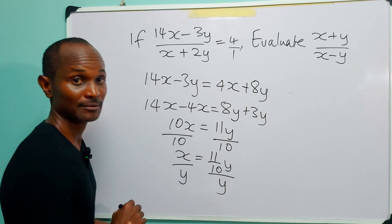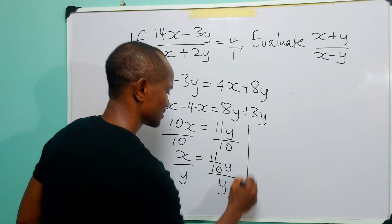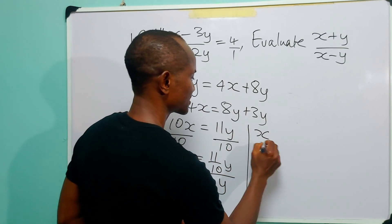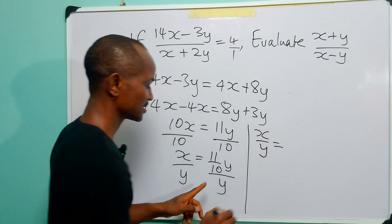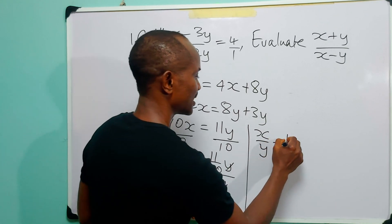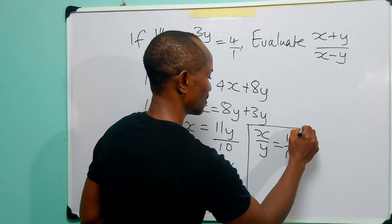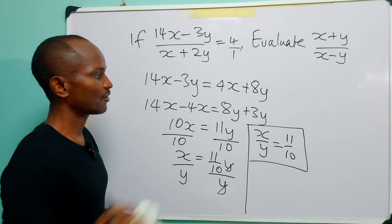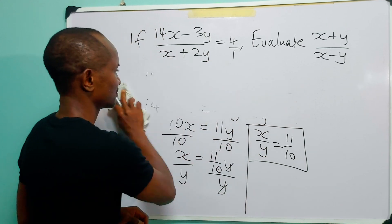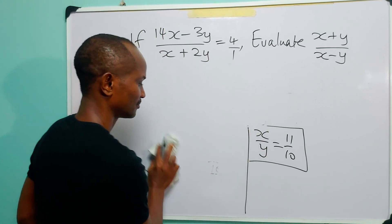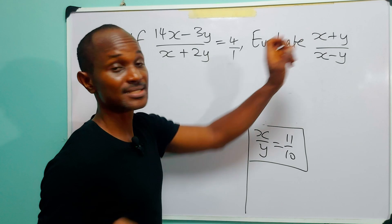And that gives us that x/y = 11/10. Now you come over to this quantity.